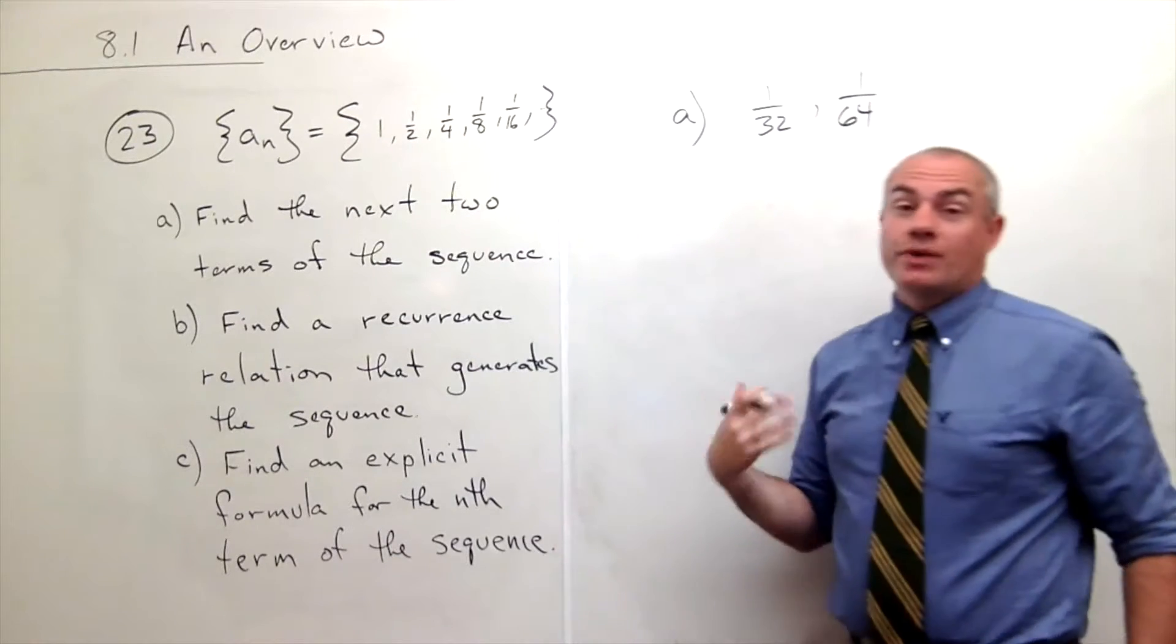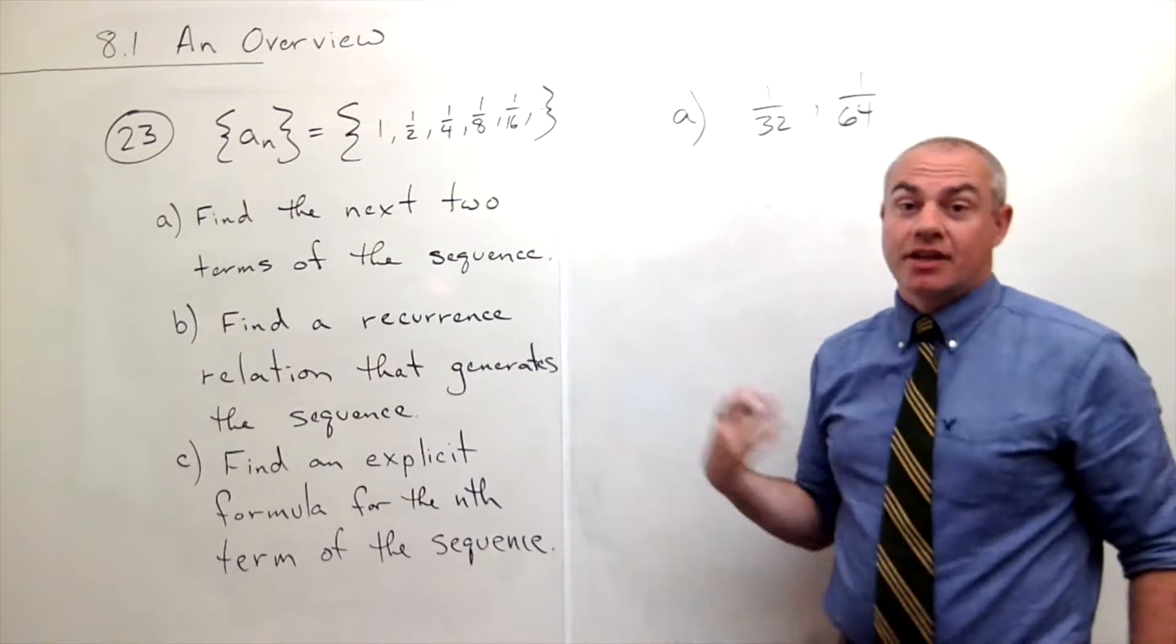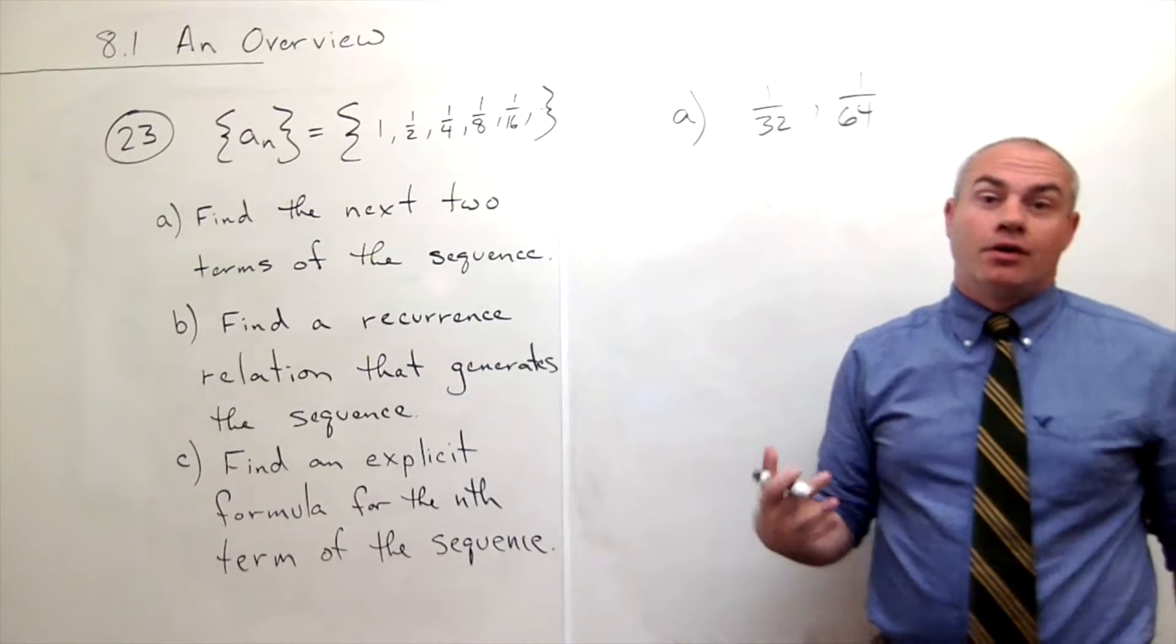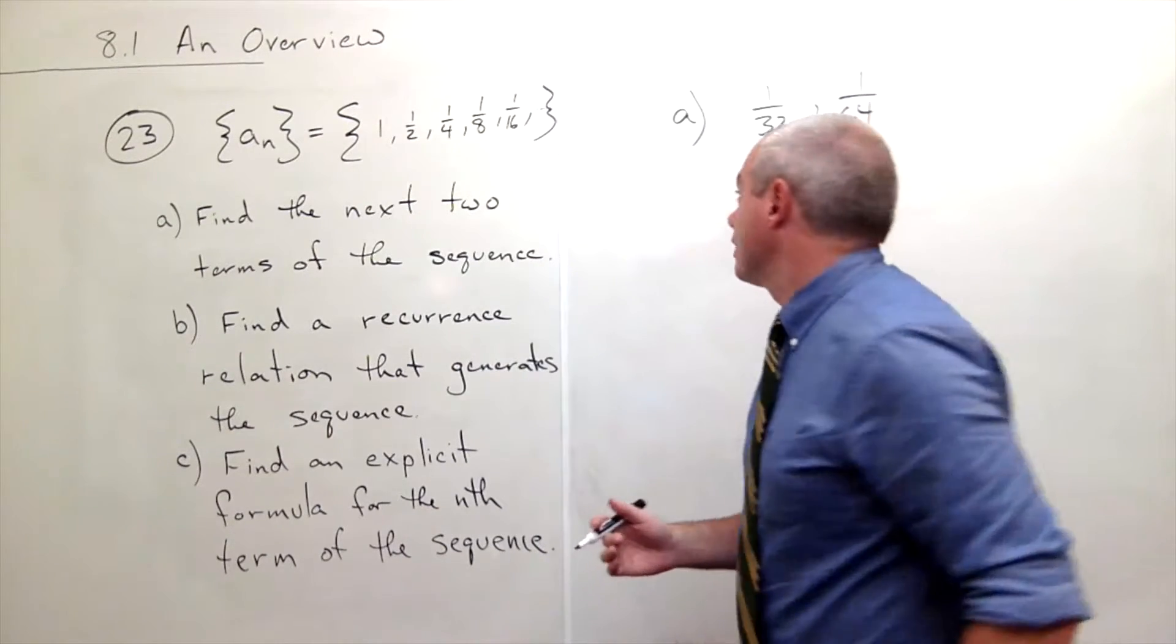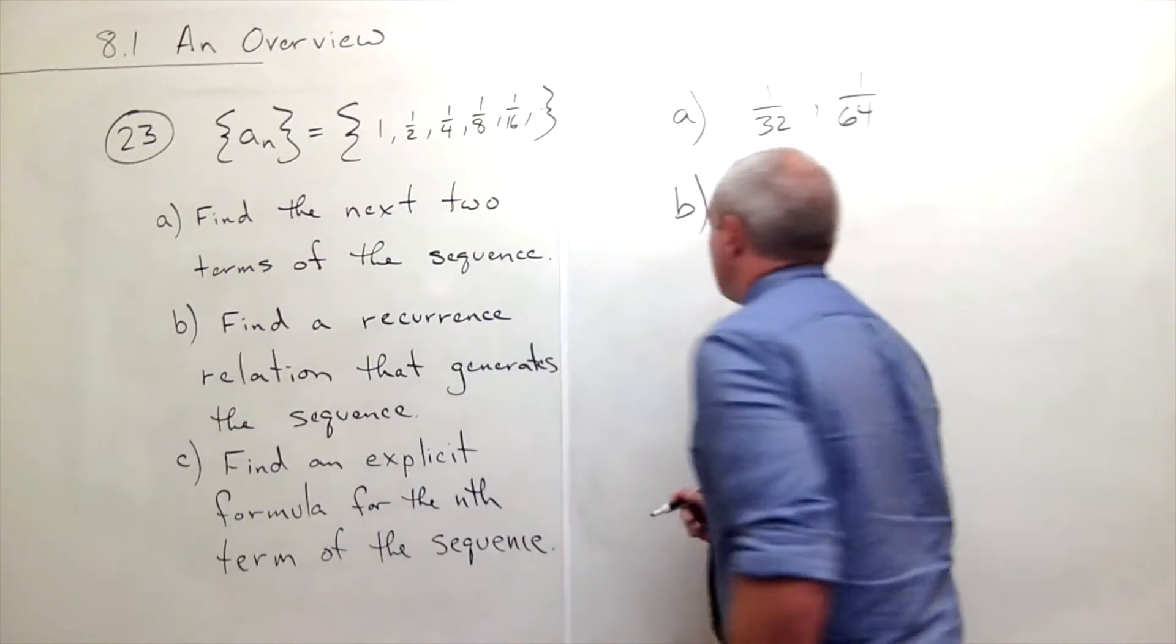So we see the pattern, and we could generate some more guys. The next would be one over one-twenty-eight, right? So part b, we want to find a recurrence relation that generates the sequence.